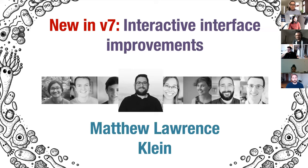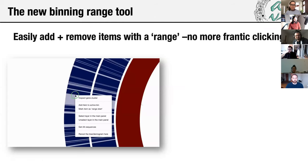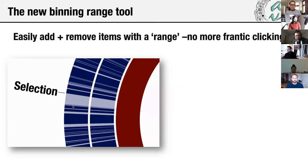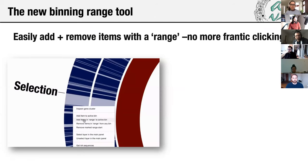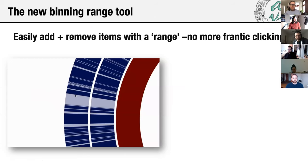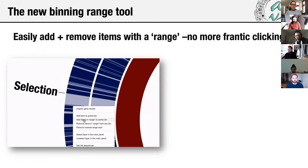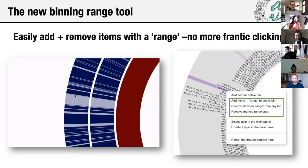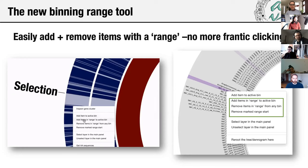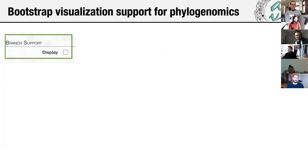Next we have Matthew Klein. I'm a programmer with the AMVIO team. I've only been with the team for a short time, but I was very excited to contribute to a couple of additions in the interactive interface for V7. The first is the ability to bin items within a range — instead of having to click each individual item, users can now set a range and add these items to the current bin, as well as remove those items. The feature is accessed via the right context menu, and this little tool should save users a lot of time and clicks.